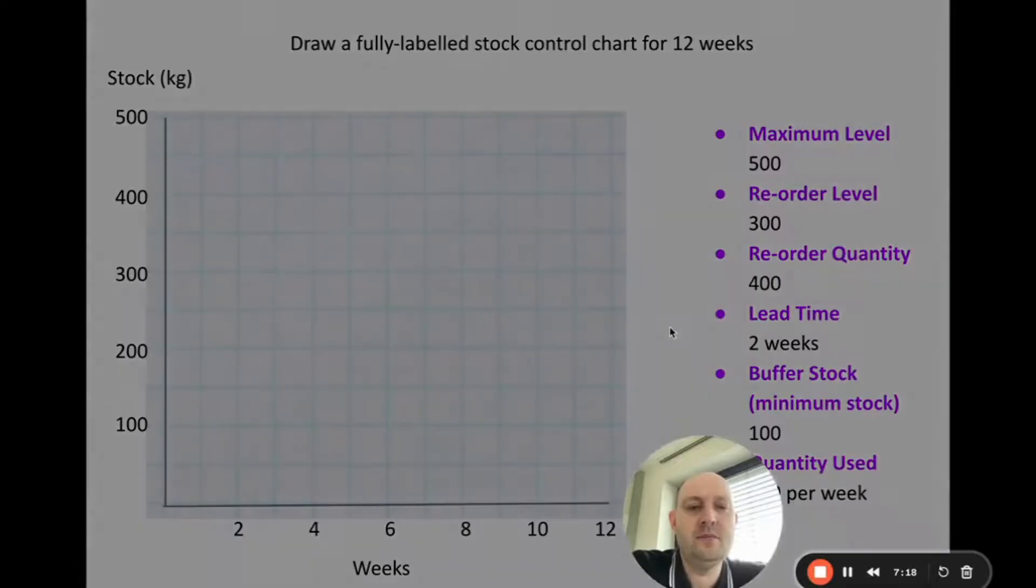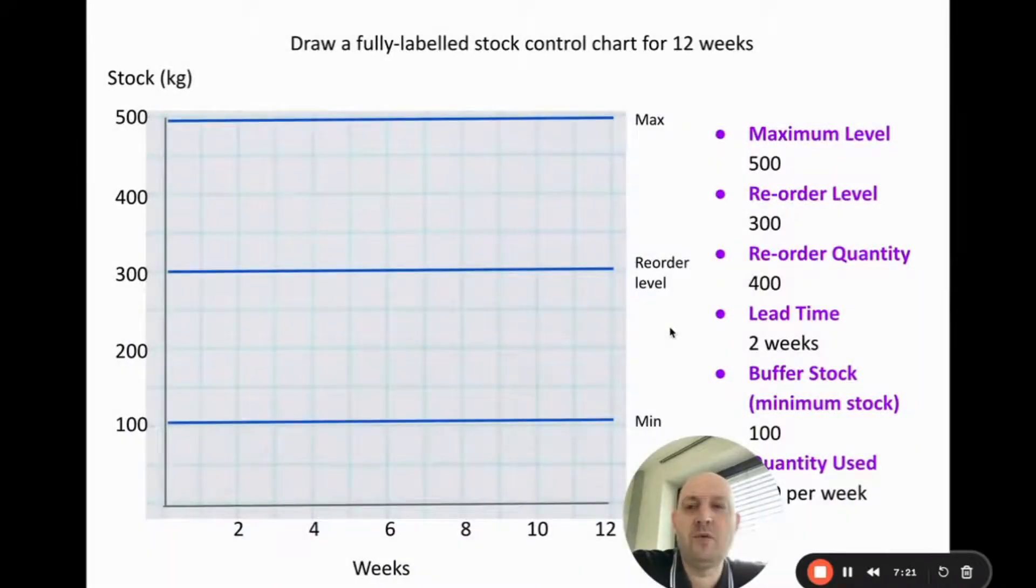Next, you want to label three things on the diagram. We want to label the maximum level, and I've drawn a horizontal line across here. You could do a dotted line if you wanted to. Then you want to have the minimum, which is our buffer stock, which is 100 down here. I haven't quite got this on the line there, but you should get that on the line. I think that's because it's quite difficult to draw diagrams in Google Sheets. And then the reorder level, we also want to draw this. When we go below this line, that triggers a reorder, so that's why I've labeled that there.